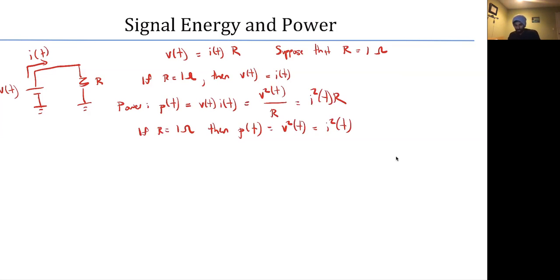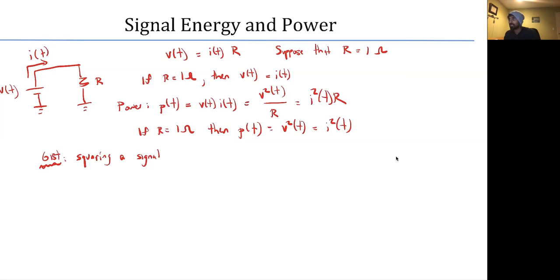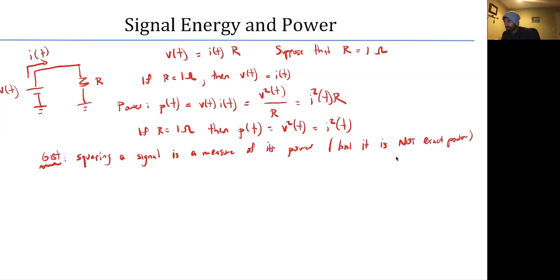The gist here is that the power we talk about in a signals and systems class is effectively the square of a signal. Squaring a signal is a measure of its power. This is not exact power, because we might not have R = 1 ohm — we'd still have V²/R or I²R — but the gist holds: squaring a signal gives a proxy of power.